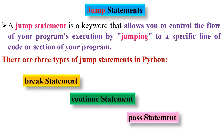Now let's discuss about jump statements. In Python, a jump statement is a keyword that allows you to control the flow of your program's execution by jumping to a specific line of code or section of your program. It is used to break the normal flow and jump to a specific line if a specific condition is true. There are three types of jump statements in Python: break statement, continue statement, and pass statement.